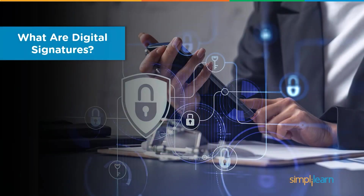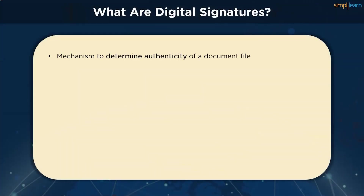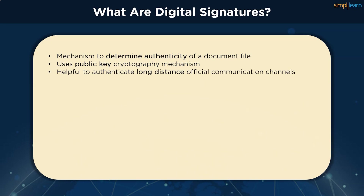Now that we have a proper revision, let's understand what digital signatures are before moving on to the algorithm. The objective of digital signatures is to authenticate and verify documents and data. This is necessary to avoid tampering, digital modification, or forgery of any kind during the transmission of official documents. They work on the public key cryptography architecture with one exception. Typically, an asymmetric key system encrypts using a public key and decrypts with a private key. For digital signatures, however, the reverse is true.